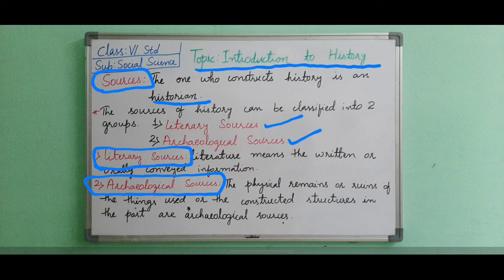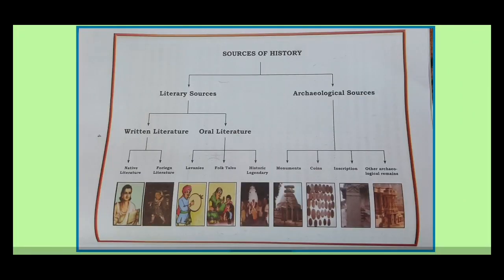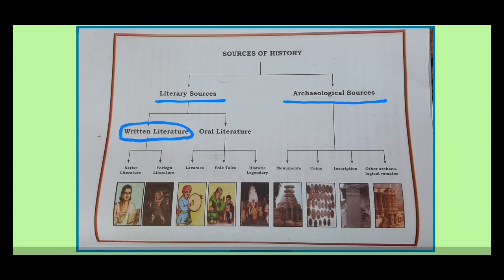Looking at the diagram on screen, the sources of history are divided into two: literary sources and archaeological sources. Literary sources are things in written form. Literary sources are further divided into written literature and oral literature. Written literature includes books and magazines, while oral literature includes stories, legends, and ballads, like folk songs.